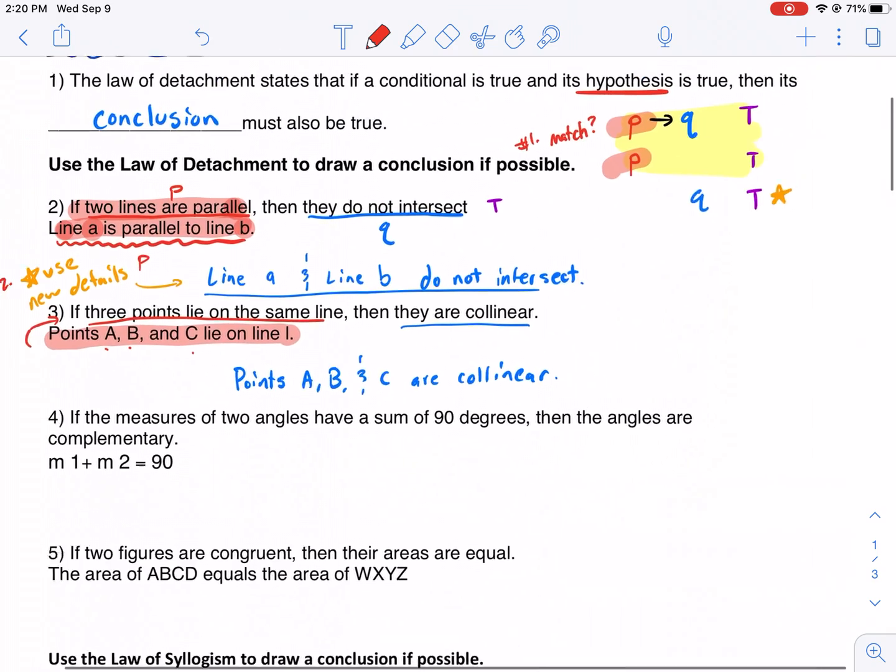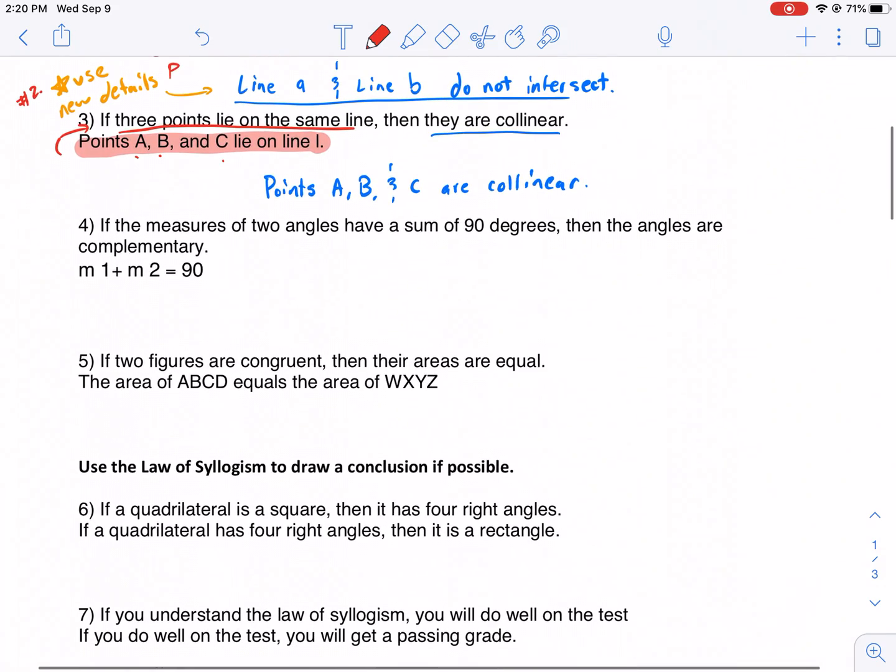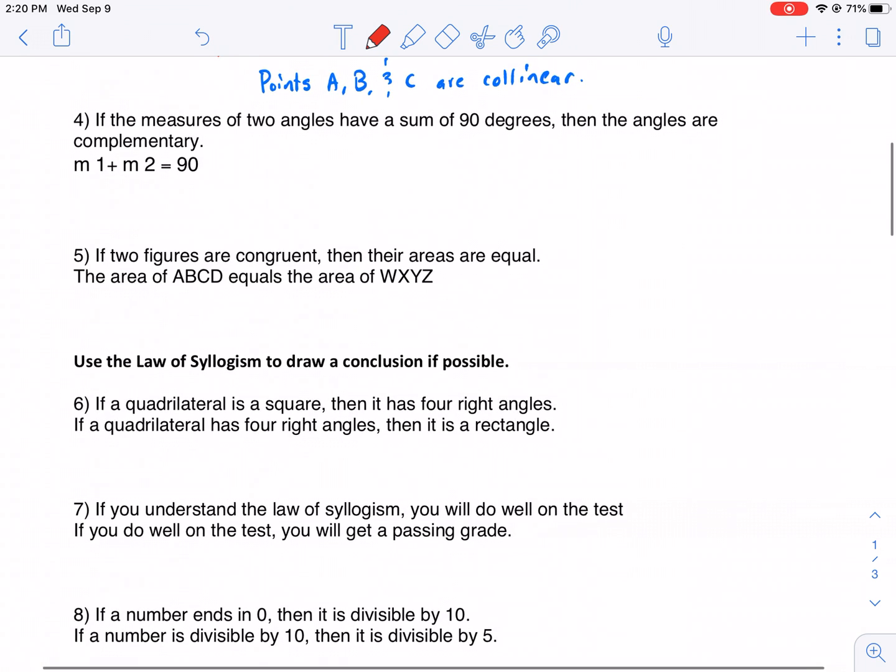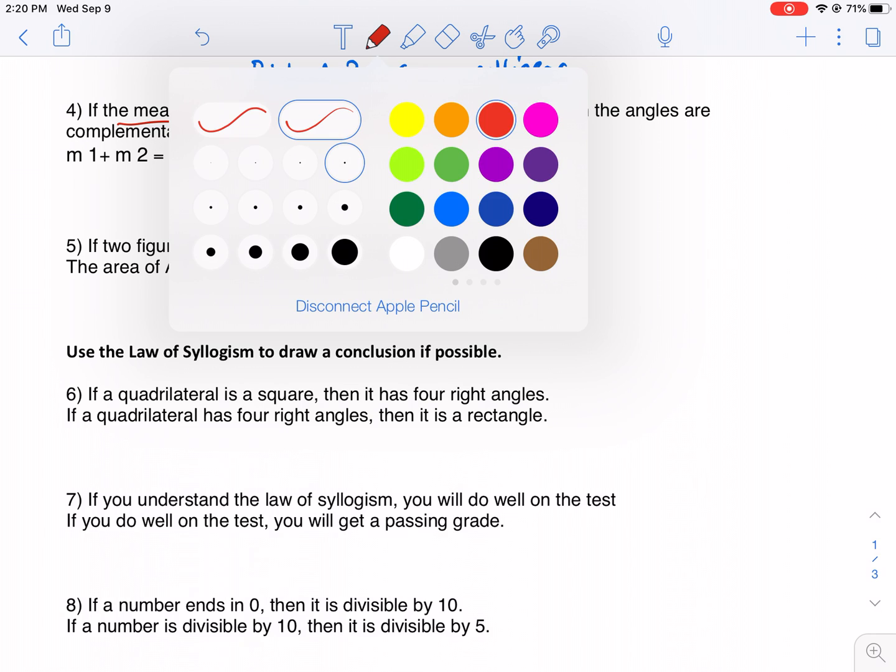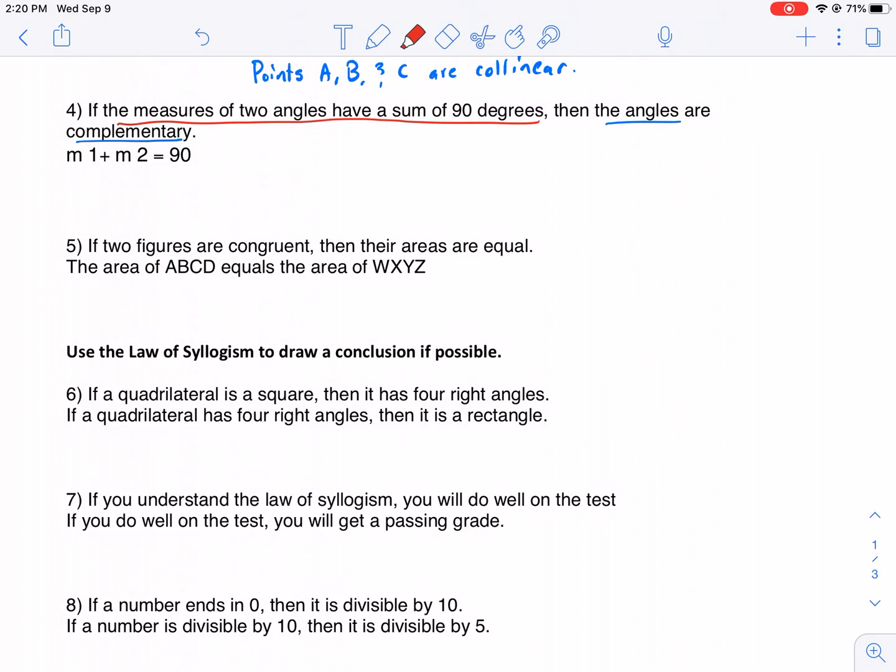If the measures of two angles have a sum of 90 degrees, then the angles are complementary. Both of those are true. That's a true statement. There's the hypothesis, there's our conclusion: the angles are complementary. Does this match the first hypothesis? Yes. It's talking about the sum. Measure of angle 1 plus measure of angle 2 equals 90. That's the same thing. It's saying that I have a sum of 90 degrees. So because these match, now we can use the new details. Instead of just two angles, we know it's angle 1 and angle 2 are complementary. Not just any angles. Now that we have details, we can say that we're talking about angles 1 and 2 are complementary.